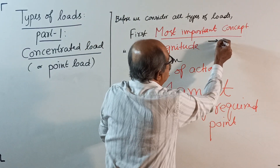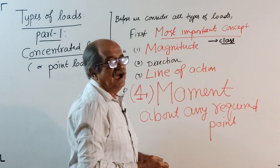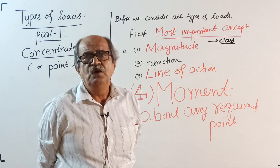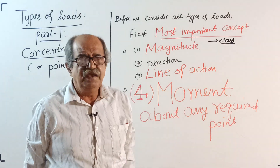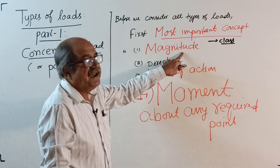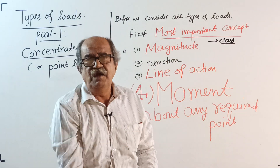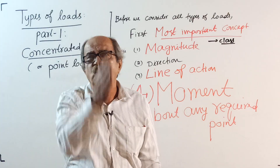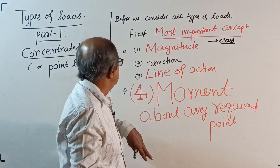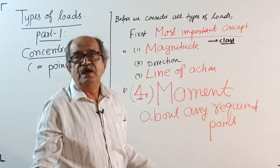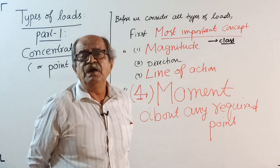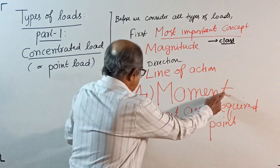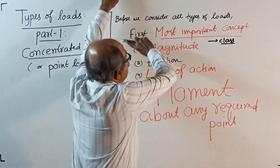I'll dictate something in the class. Whether it is a point load or any type of distributed load — UDL, UVL, anything — what we require is: one, magnitude of the load; two, direction (you can make out by looking — down, up, like that); three, line of action of the load, which is very powerful; and four, the most powerful — moment about any required point. These four should be completely understood.